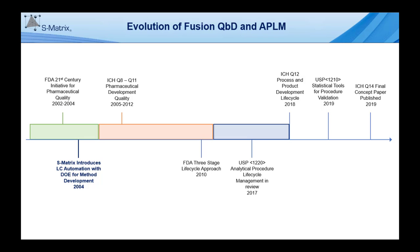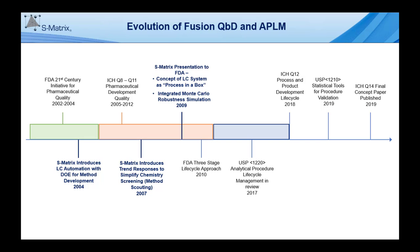In 2007, S-Matrix introduced our patented trend responses to eliminate the need for laborious and error-prone peak tracking in chemistry screening studies, also referred to as method scouting. In 2009, S-Matrix presented the concept of the LC system as a process in a box and the integration of Monte Carlo robustness simulation with Fusion QBD to the FDA.